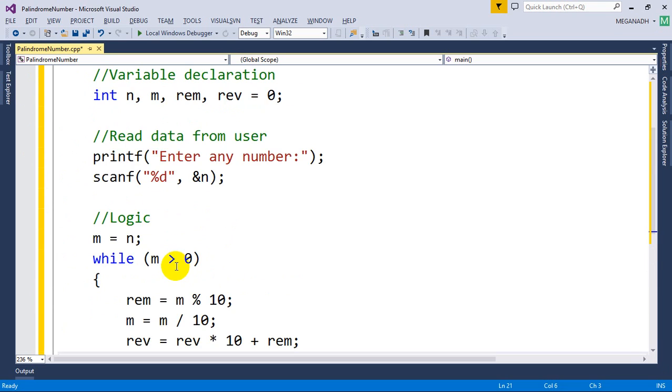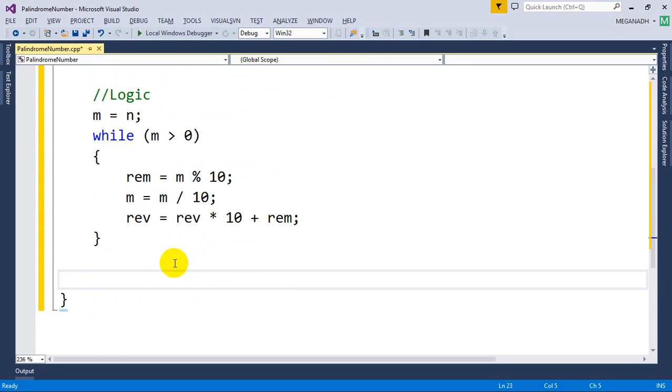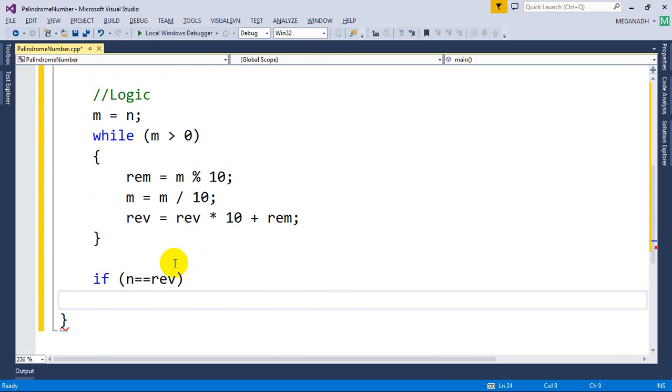Now we are done. Now what we have to do is we need to check if n is equal to reverse, we need to print printf percent d is a palindrome and I need to print the value of n.